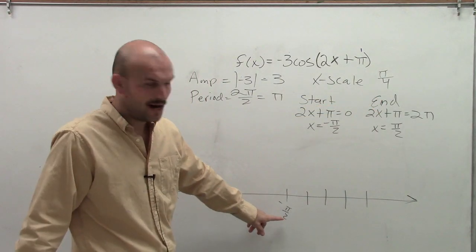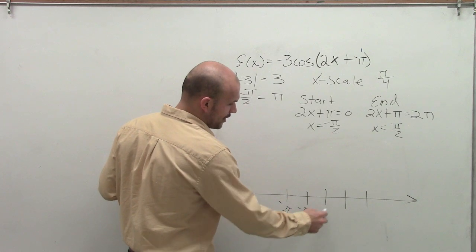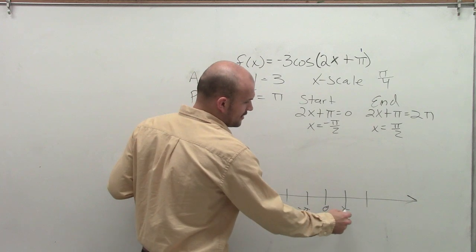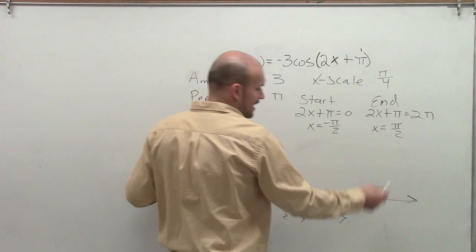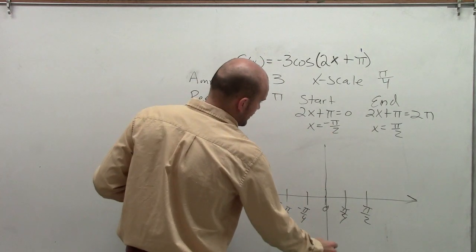So each distance is π/4 away from each other. So if I'm at -π/2, to add π/4 to that, I'm going to have -π/4. Then I'll be at 0. Then I'll have π/4. And then my ending point is, of course, at π/2. So therefore, my y-axis is going to be right here.